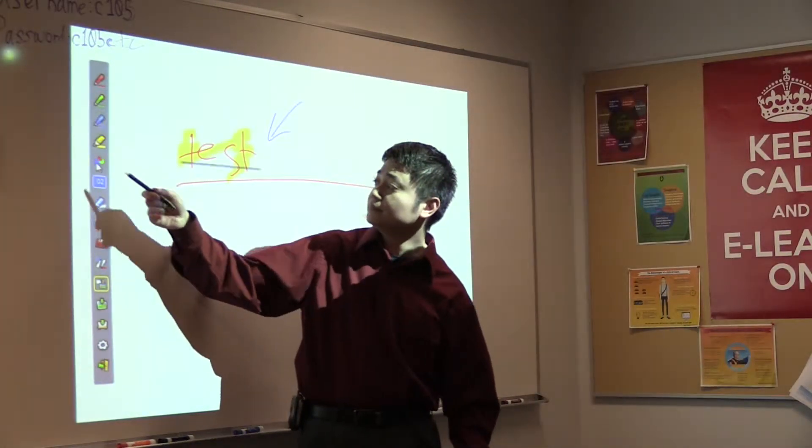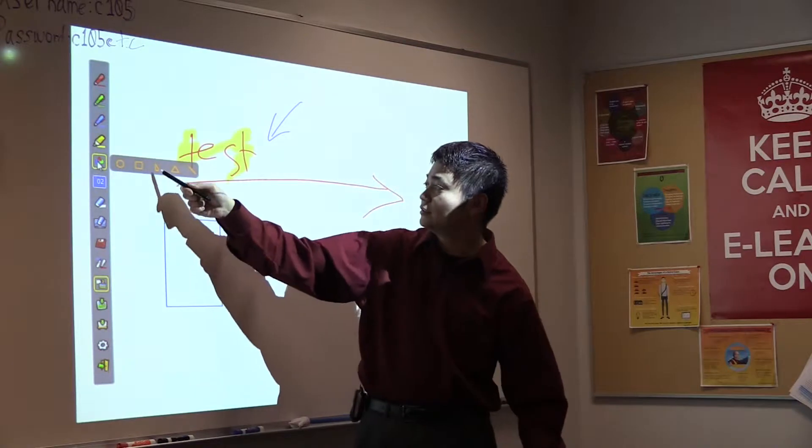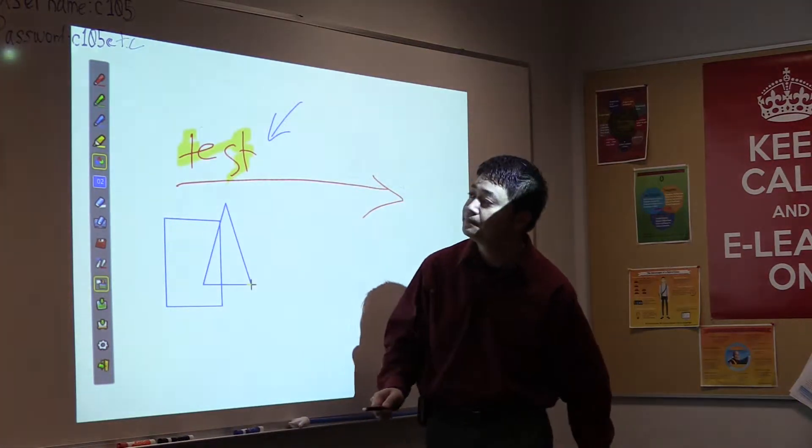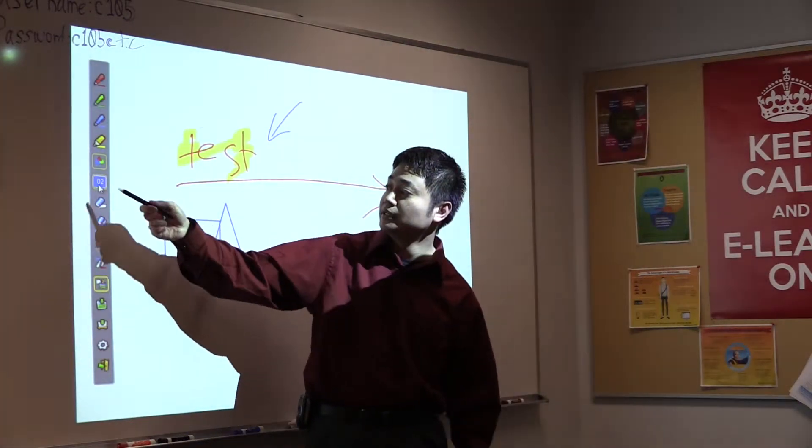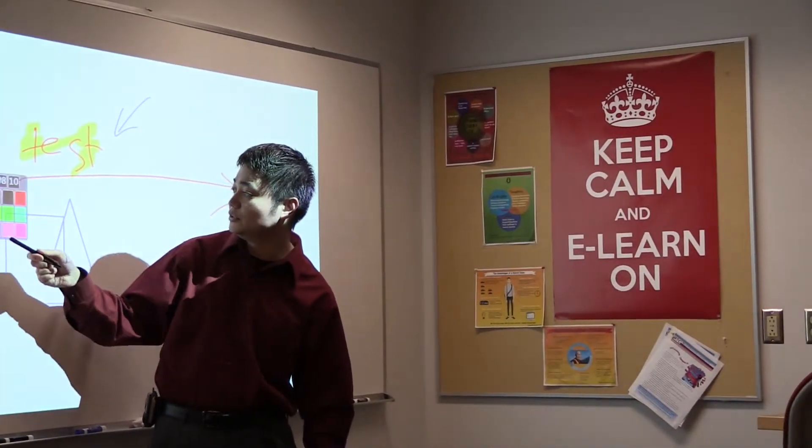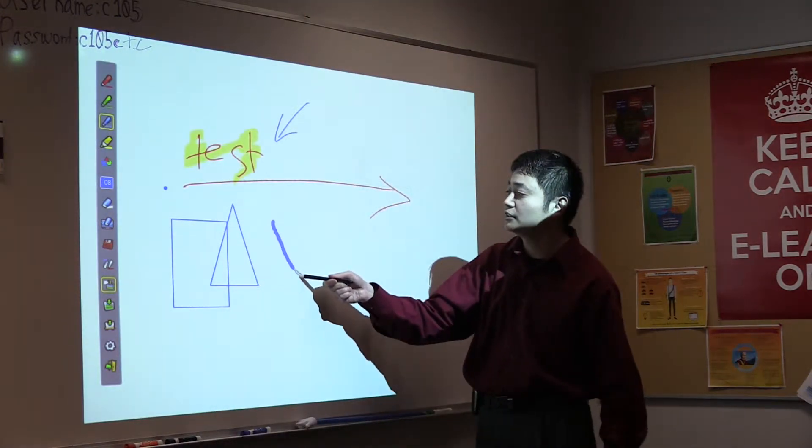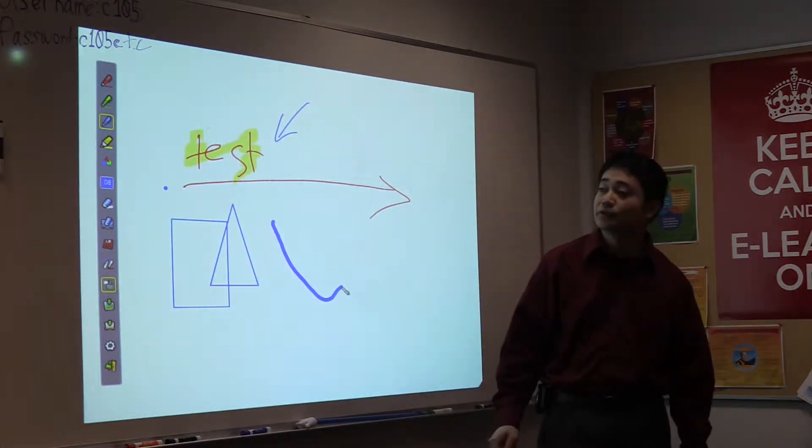You've got shapes. So you've got a square, your standard triangles and so forth. And then if you want to customize your pen, you would click on this, choose the size, choose the color. And then as you can see, it's a lot thicker at that point.